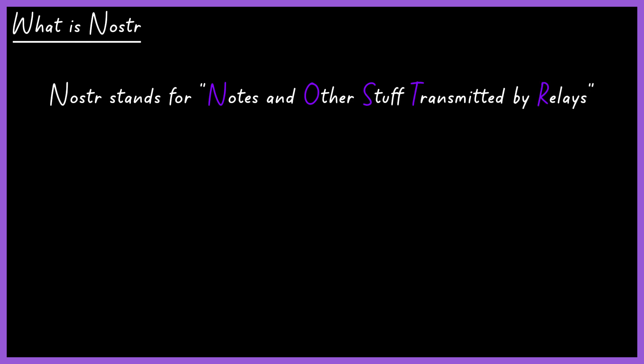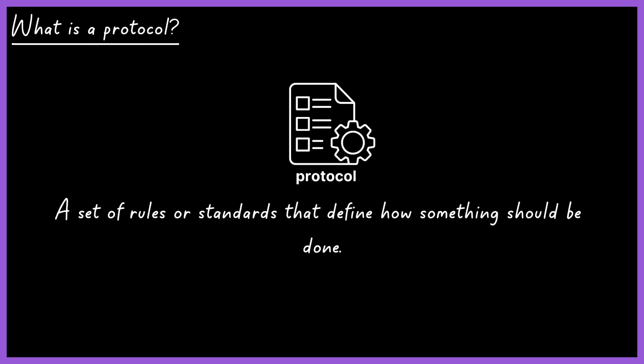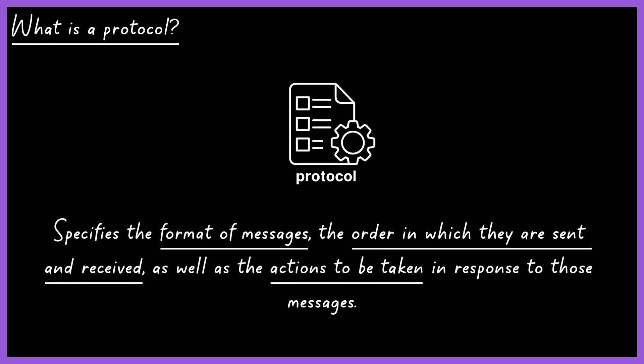Nostr stands for Notes and Other Stuff Transmitted by Relays. As defined by its creator, Nostr is an open, simple protocol capable of creating a global, censorship-resistant social network. If you're less familiar with the topic, you might be wondering: what is a protocol? Think of a protocol as a set of rules or standards that define how something should be done. In the context of networks and technology, it specifies the format of messages, the order in which they are sent and received, as well as the actions to be taken in response to those messages.